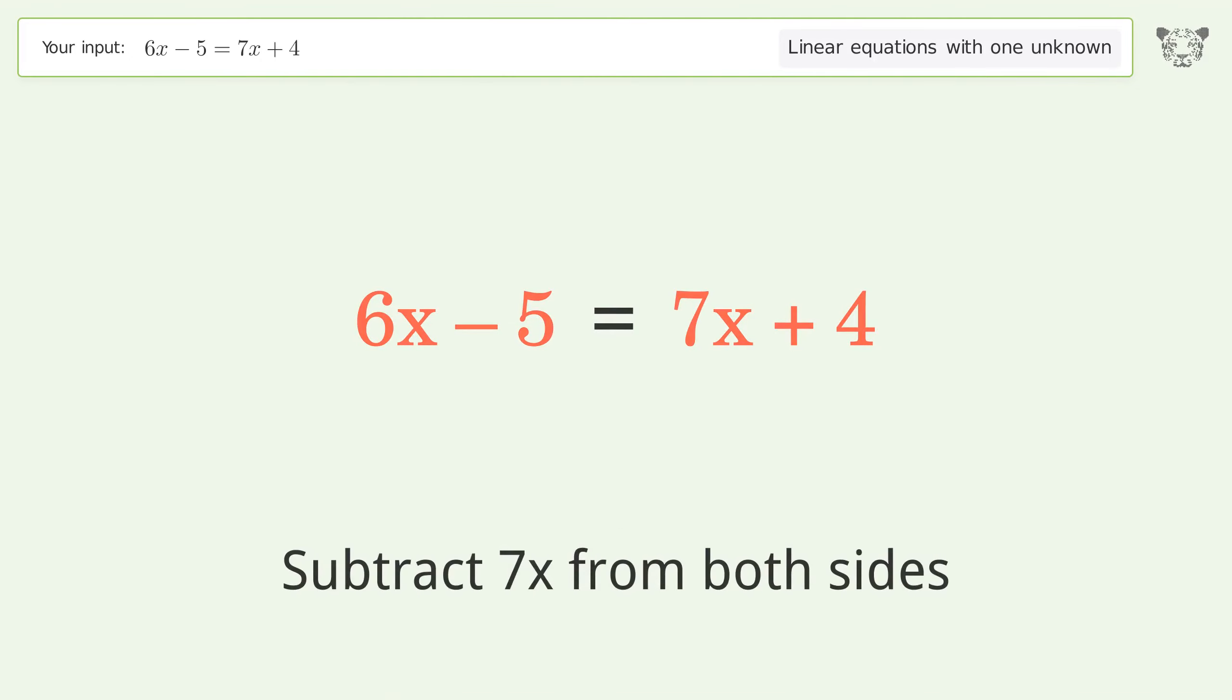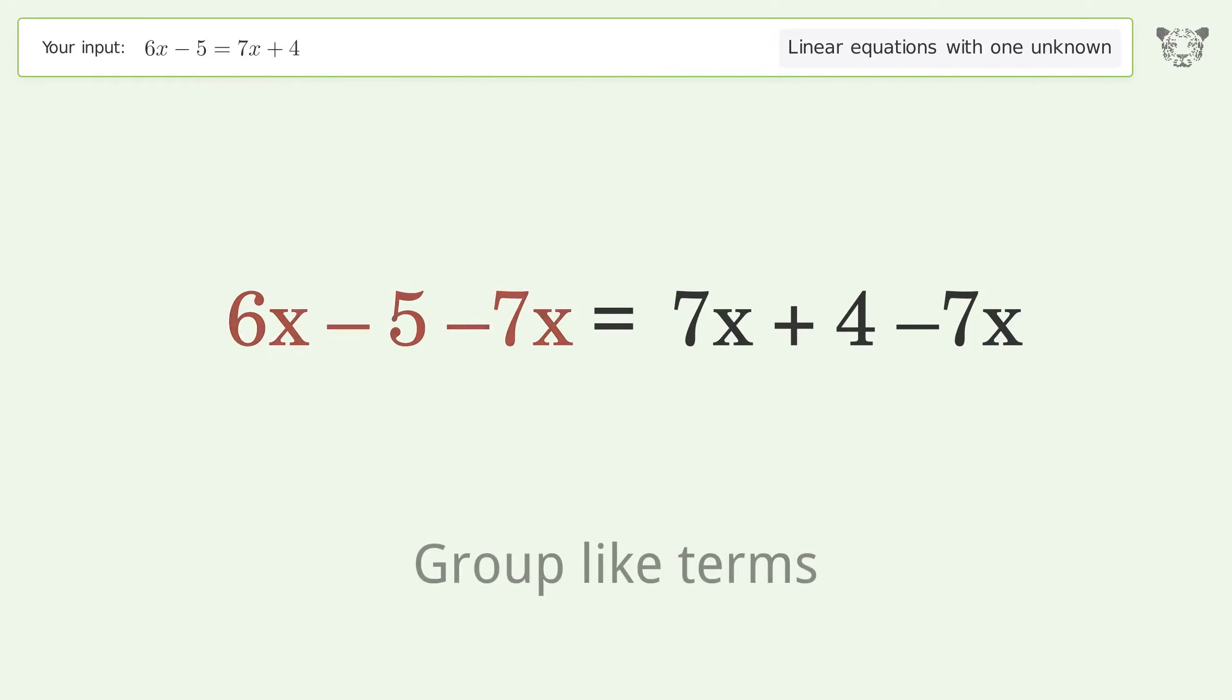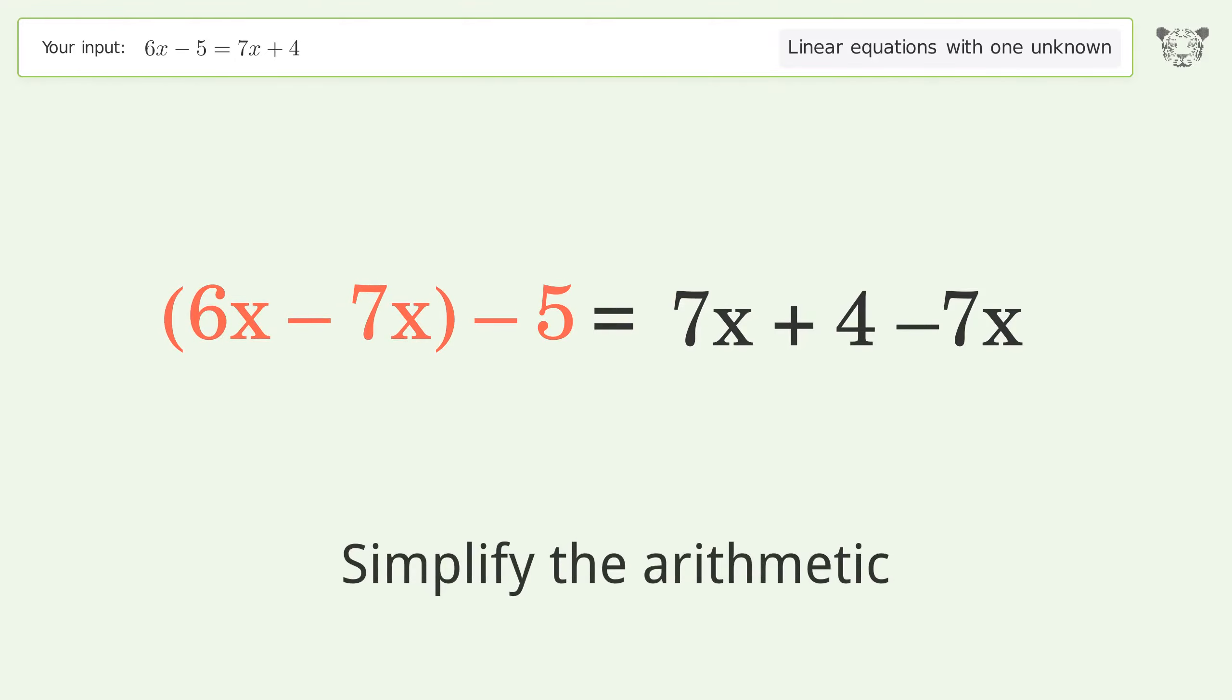Subtract 7x from both sides. Group like terms. Simplify the arithmetic.